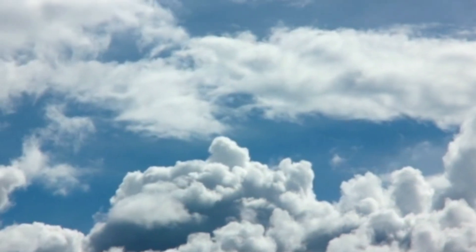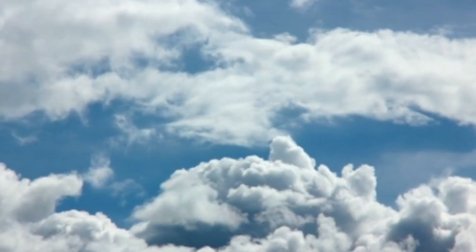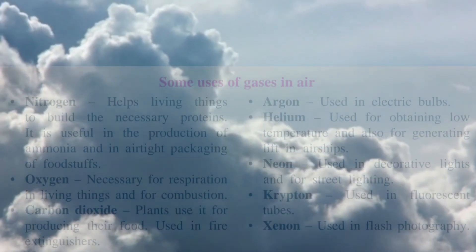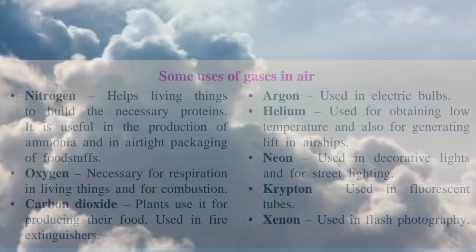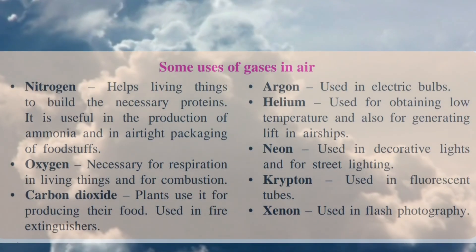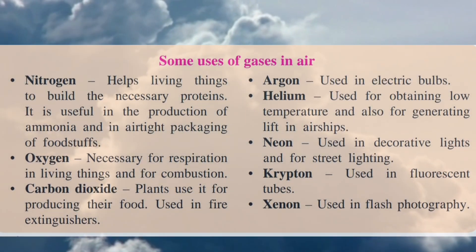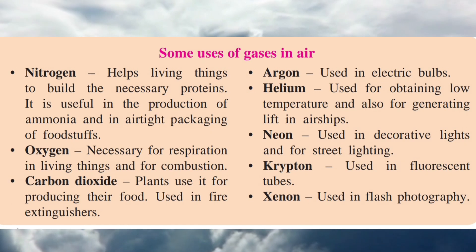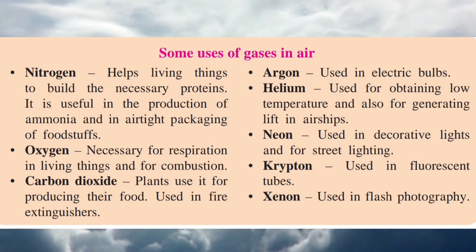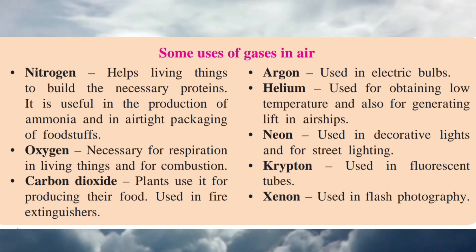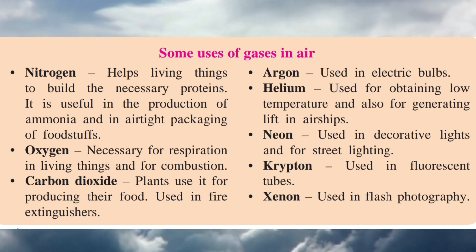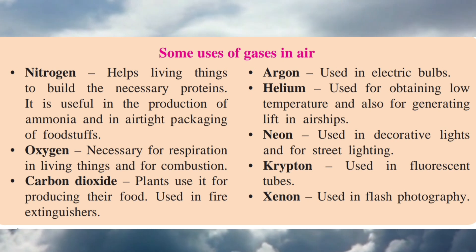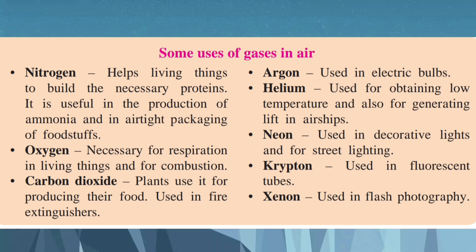The constituents of air and some of their uses: Nitrogen — helps living things to build necessary proteins; useful in production of ammonia and in airtight packaging of foodstuffs. Oxygen — necessary for respiration in living things and for combustion. Carbon dioxide — plants use it for producing food; used in fire extinguishers. Argon — used in electric bulbs. Helium — used for obtaining low temperatures and for generating lift in airships. Neon — used in decorative lights and street lighting. Krypton — used in fluorescent tubes. Xenon — used in flash photography.